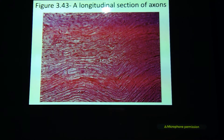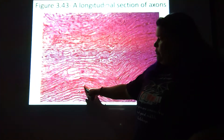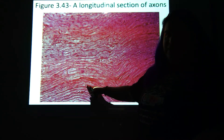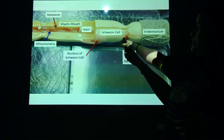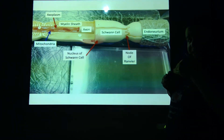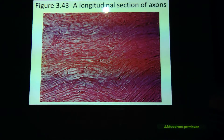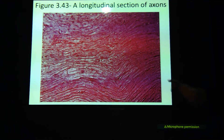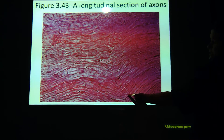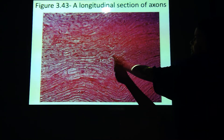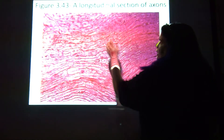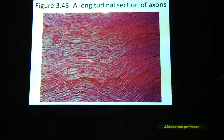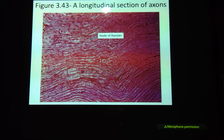Looking at a longitudinal section of axons, see these things? They almost look like they're kissing here. This is where those Schwann cells are making that node of Ranvier. So if you look, you can see them here, here, and here — you can see where they look like they're kissing each other. So you've got those nodes of Ranvier.